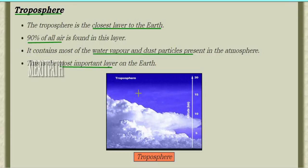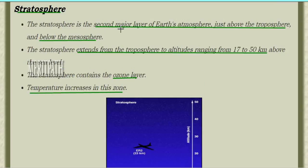The stratosphere is the second major layer of Earth's atmosphere, located above the troposphere. It ranges from 17 to 50 kilometers above sea level. The stratosphere contains the ozone layer, which is why temperature is always higher in this zone.